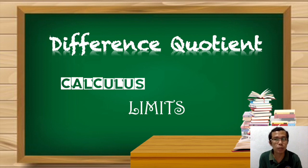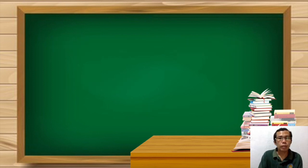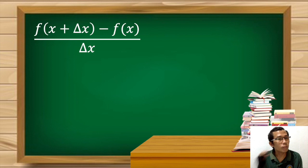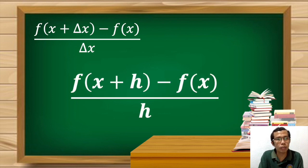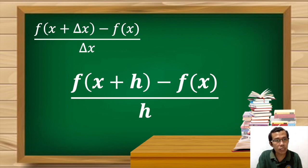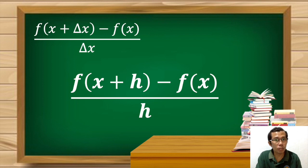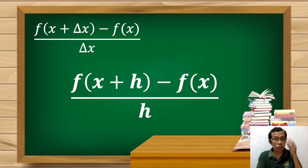To introduce the formula we're going to use: we have f(x+Δx) minus f(x) all over Δx, and another one we have f(x+h) minus f(x) all over h. The first formula and the second formula are just the same — the only difference is the notation. The first one uses delta x while the other uses h. For this topic we'll be using the second one.